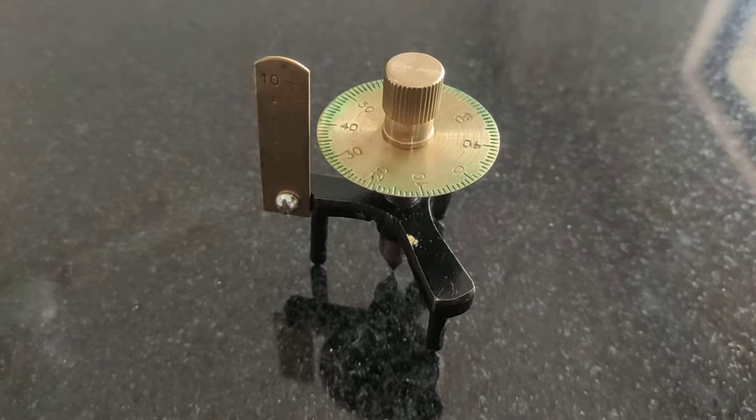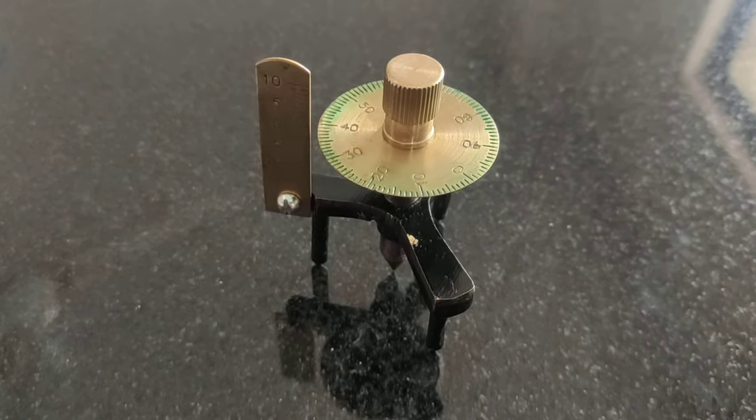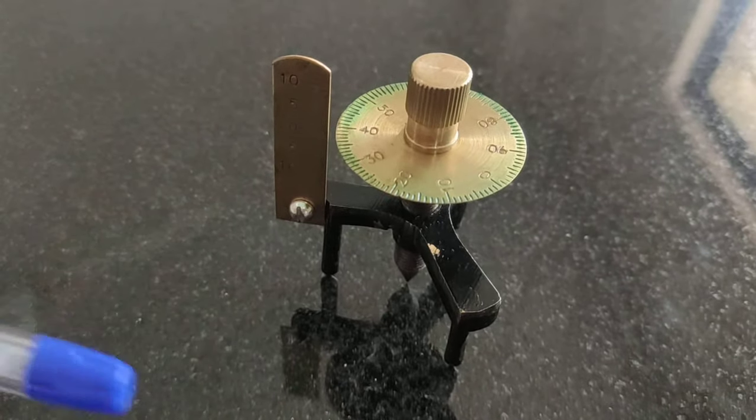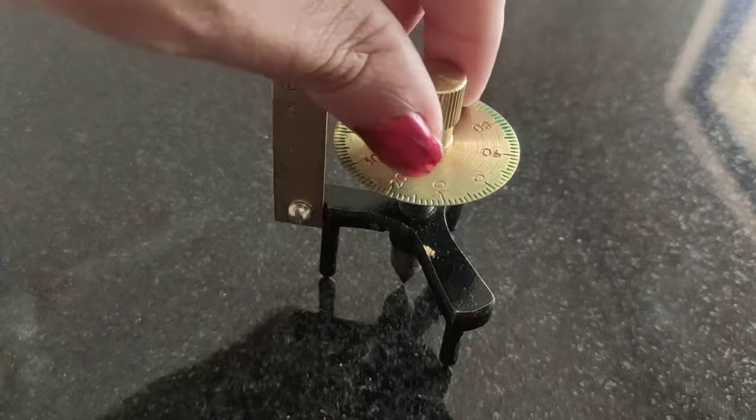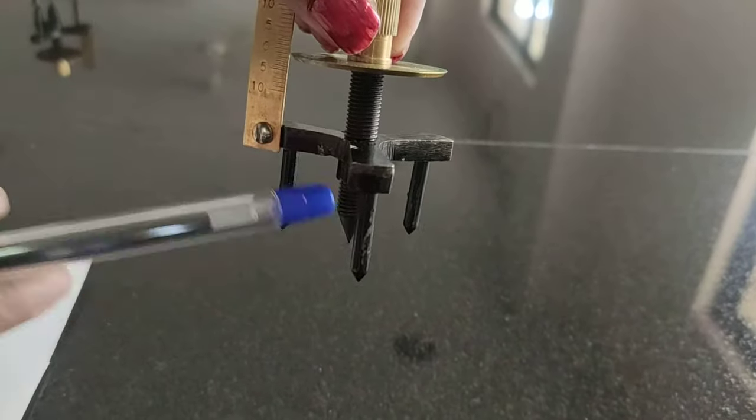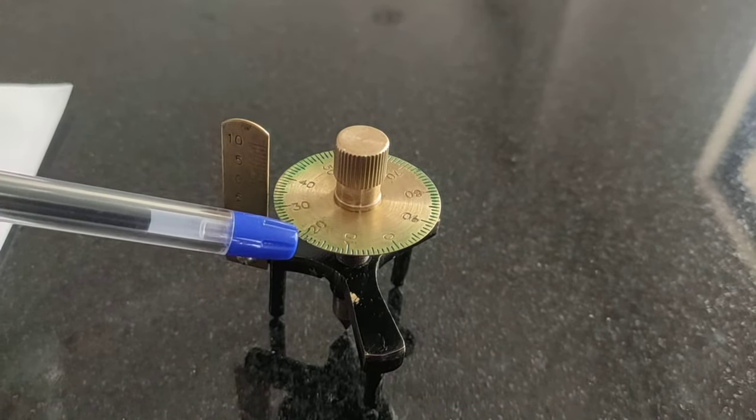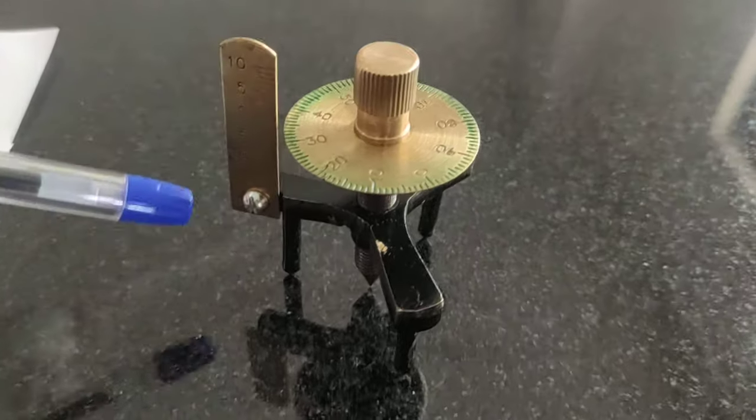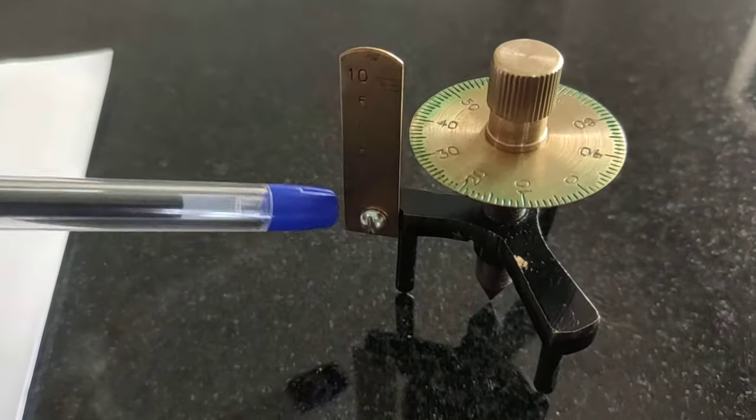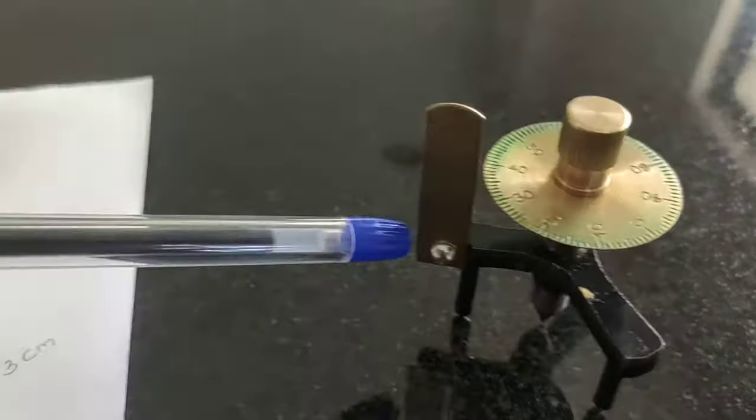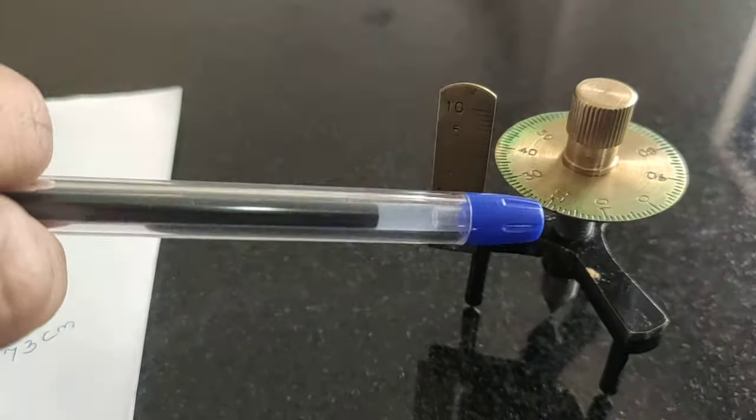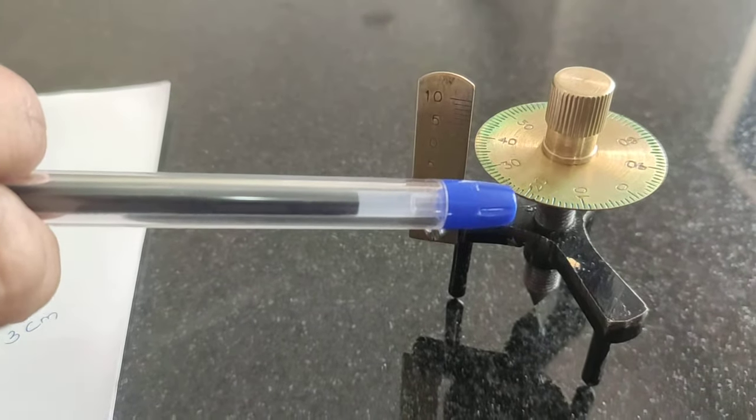You can see the apparatus which is known as spherometer. It has three legs - 1, 2, 3 - and a middle screw. There is a circular scale which has 100 divisions on it and a main scale. The least count of this scale is 0.1 cm and the number of circular divisions are 100.